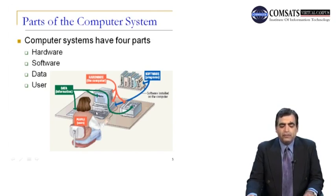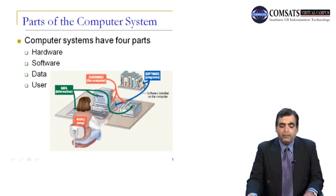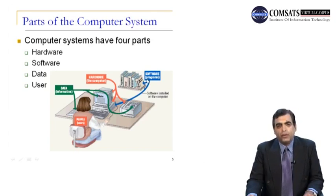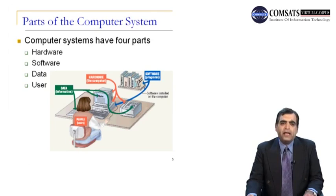In the diagram, the computer monitor, CPU, keyboard, and printer are all hardware. Data is the information which is displayed or put inside the system, and people or users interact with the system. Software are the programs installed on the computer system — basically the problem solver. These programs help the user solve their problems and make them easy to use.